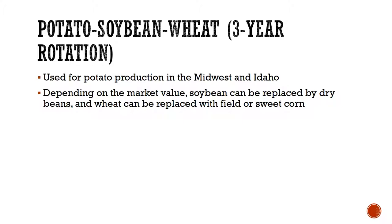A potato-soybean-wheat rotation is a three-year rotation used more in the Midwest and western United States, including Idaho. Depending on the market, either potatoes or soybeans will be your cash crop. If the wheat doesn't work out due to weather, it can be replaced with field or sweet corn, which also depends on the local social and market context — if sweet corn is a high cash crop for that area, it might be advantageous to grow that instead.